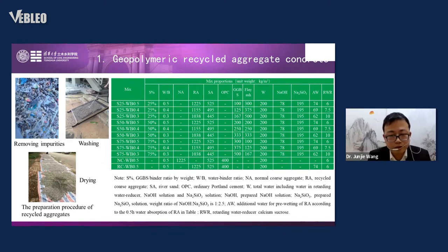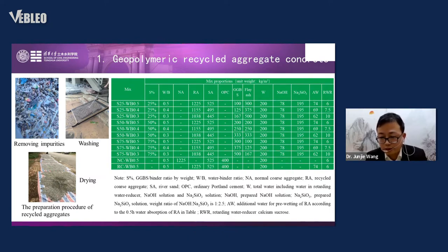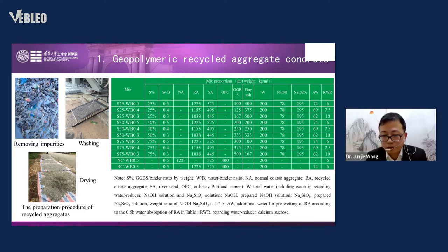In our research, we first remove impurities from the construction waste, then crush, wash, and dry them. We use the recycled aggregates to cast geopolymeric concrete. The geopolymer is composed of slag and fly ash. We use alkaline solutions — NaOH solution and Na2SO3 — to activate the slag and fly ash. We consider three different water-binder ratios: 0.3, 0.4, and 0.5.